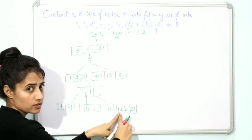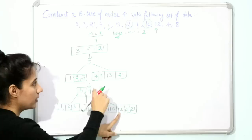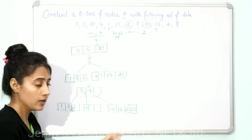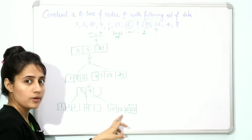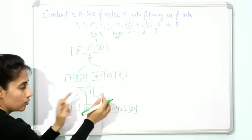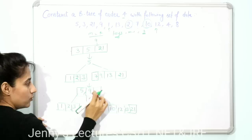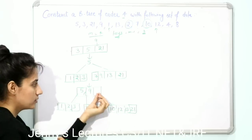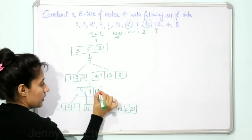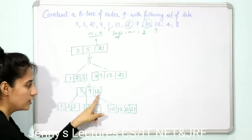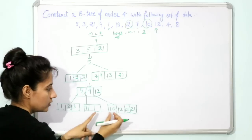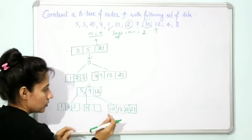Since the tree is left-biased, we take 12 as the middle element. 12 goes one level up to its parent node [5, 9], and we can insert 12 there since one place is still available — the parent becomes [5, 9, 12]. The original node is split: 10 becomes the left child of 12, and 13 and 21 become the right child of 12.